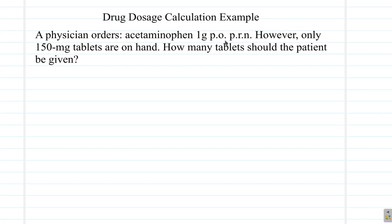Drug dosage calculation example. A physician orders acetaminophen 1 gram by mouth as needed. However, only 150 mg tablets are on hand. How many tablets should the patient be given?